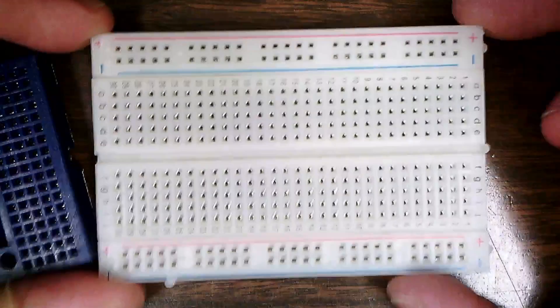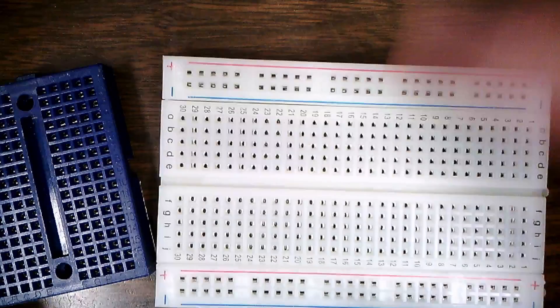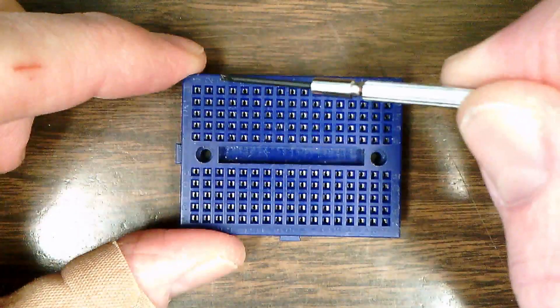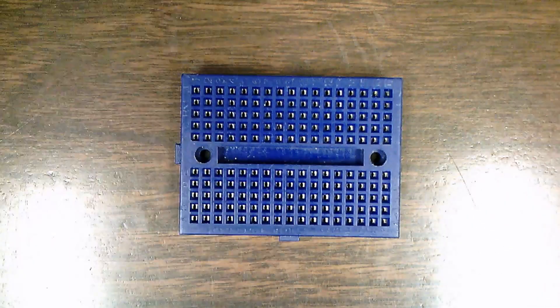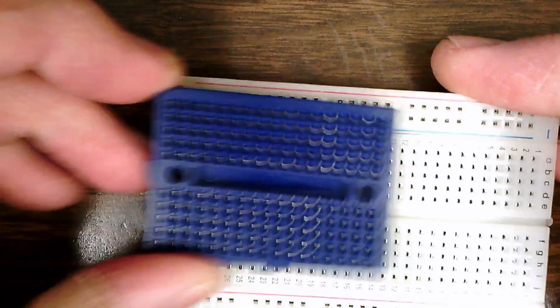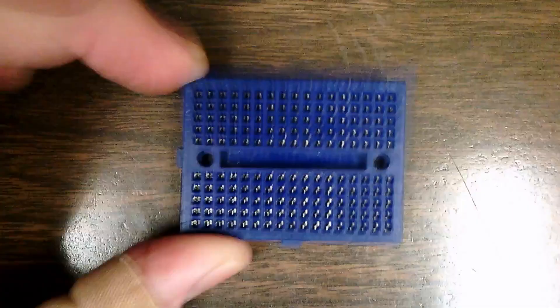Alright, so here we have a half-size breadboard with the strips across the top. We also have a cute little mini breadboard. It doesn't have the strip across the top, but there's a lot of times that you don't really need the strip and the small size is nice. It's even a quarter size or third, something like that.